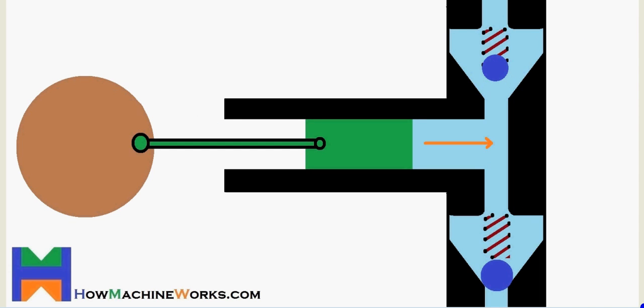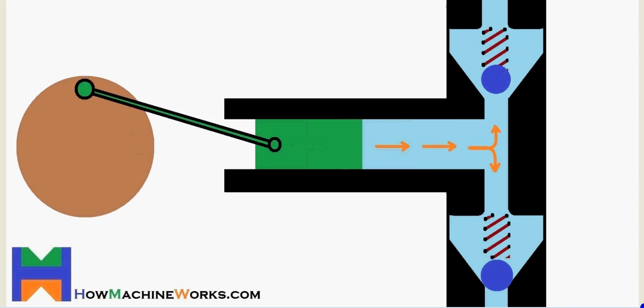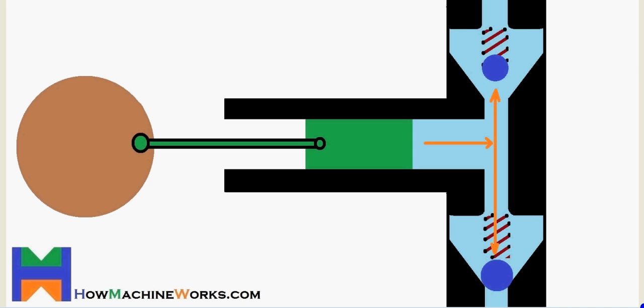As the outlet valve opens up, the oil can escape. Further, the rotor is rotating and the plunger moves further towards the front, which pushes the oil outside through the outlet. That's how the discharge is happening in a plunger pump.